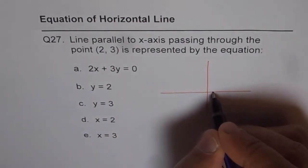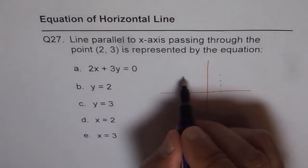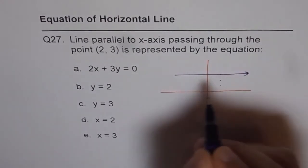So let's say this is 1, 2 and this is 1, 2, 3. So it is going through this point so we have this kind of a line.